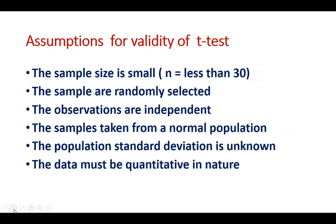Criteria for applying t-tests — that is, assumptions for the validity of t-tests. The sample size should be small, meaning less than 30; for more than 30 you have to apply a z-test. The samples are randomly selected, the observations are independent, the samples are taken from a normal population, and the population standard deviation should be unknown.